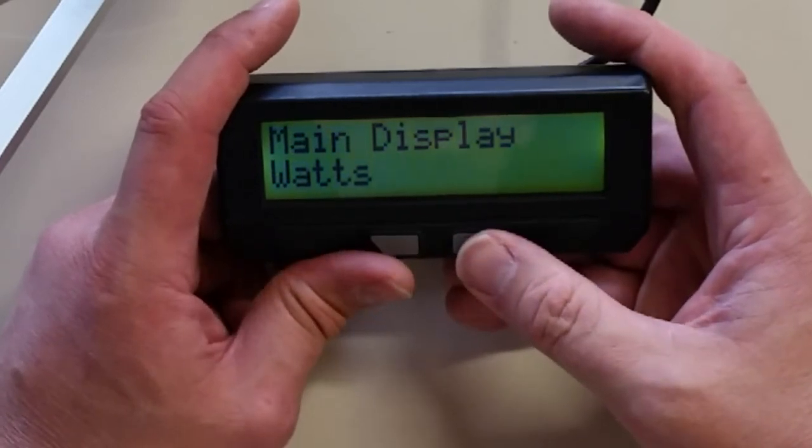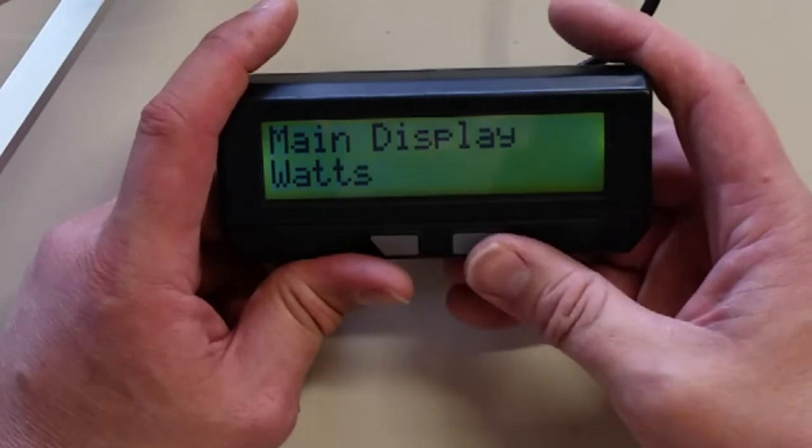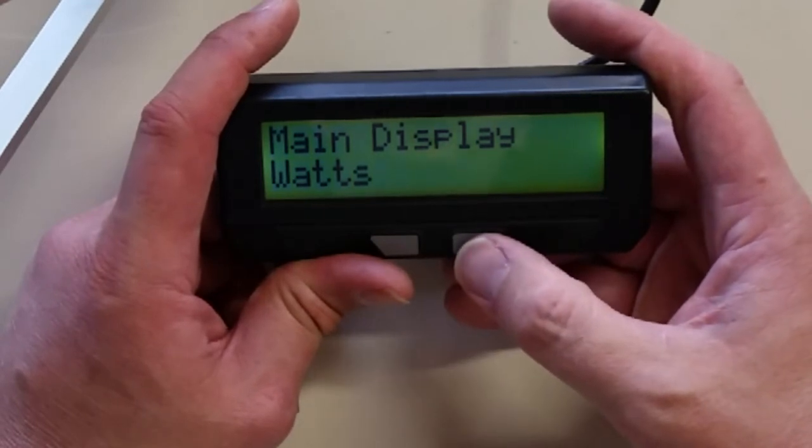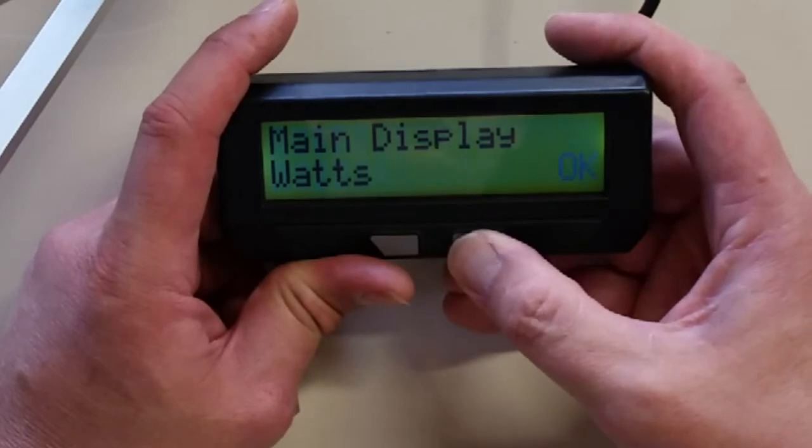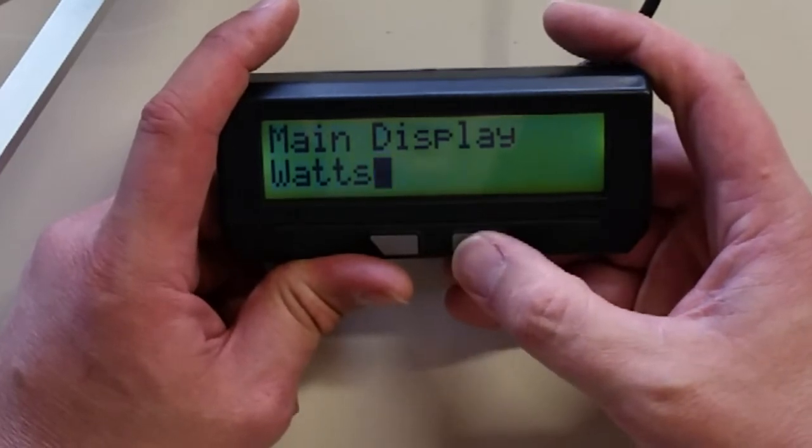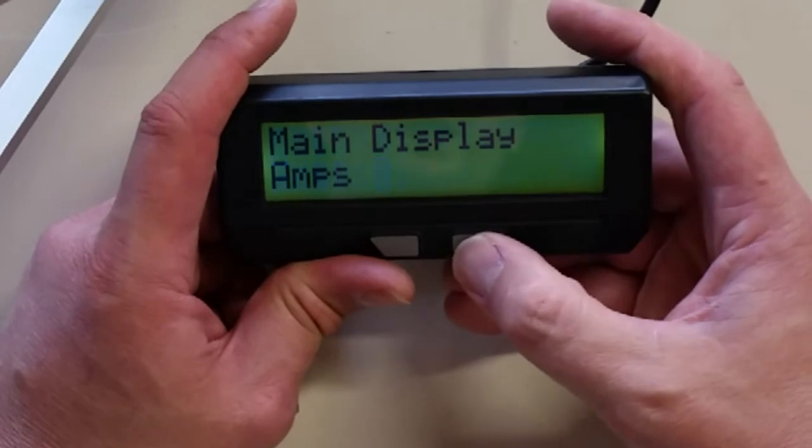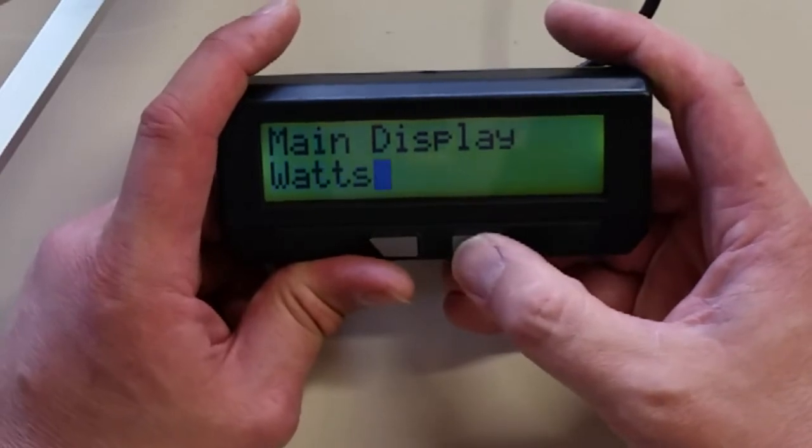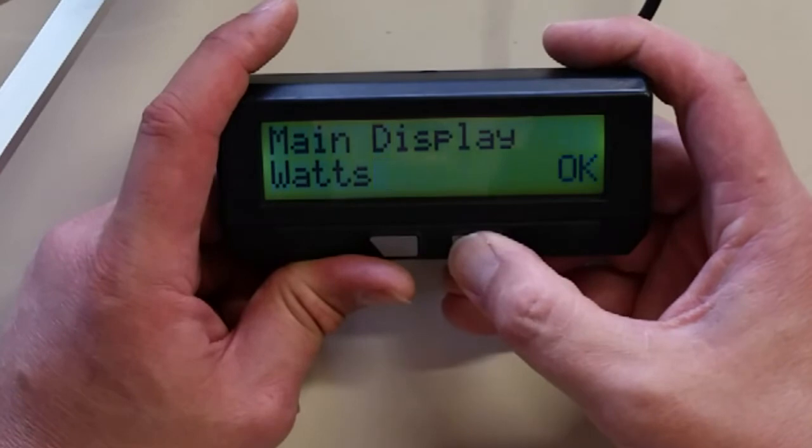Main display watts. This is where we can change what's shown on the main display. Let's just go look at the options that are available. So we'll press and hold to see what we have. So we can have watts. We can have amps. And that's it. So I'm going to stick with watts. So I'm just going to press and hold.